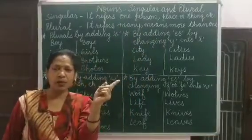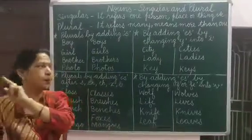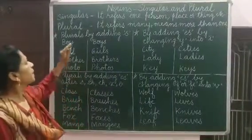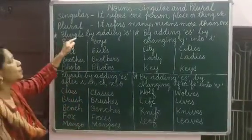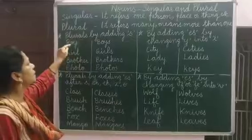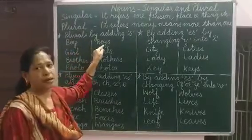For example: one house — singular; two houses — plural. Now I will tell you how to change a singular noun into a plural noun.